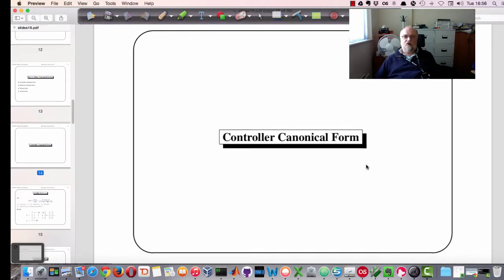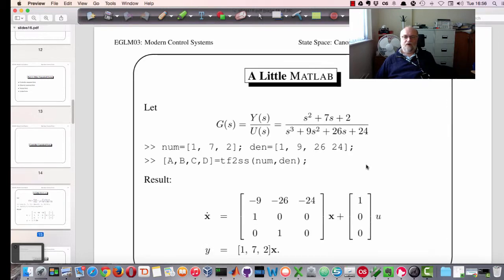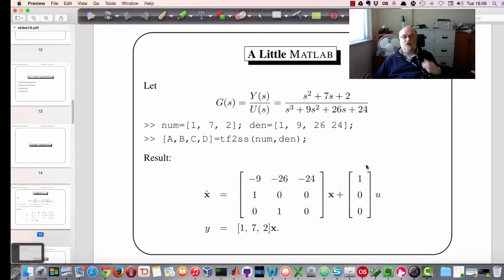We'll start off with the Controller Canonical Form. As a justification with this, I'm going to use an example from an older version of MATLAB. MATLAB still works this way if you use this form of definition. In the old MATLAB, we used to have numerator equals a polynomial denominator, another polynomial, and then we'd say ABCD is equal to transfer function to state space of numerator and denominator. That would return this structure as a result.